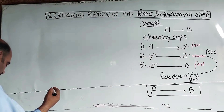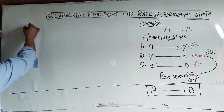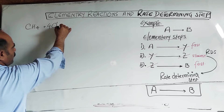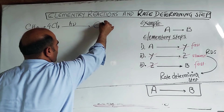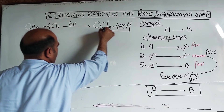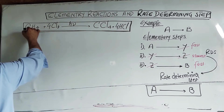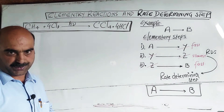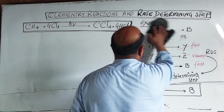Now an important example: CH4 plus 4 moles of chlorine gas in the presence of sunlight gives carbon tetrachloride plus 4 moles of HCl. This is the overall chemical reaction. This reaction completes in many steps, and these intermediate steps are called elementary steps.